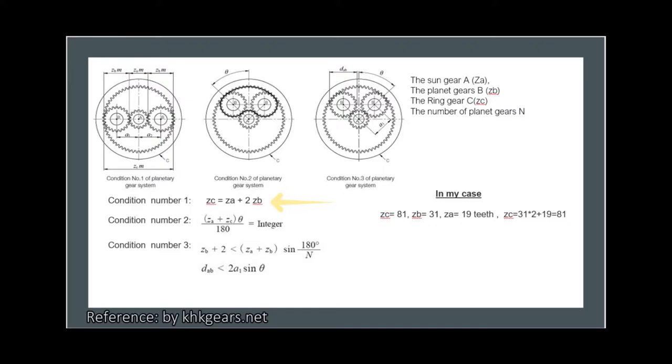Starting with the first condition, which is the one necessary for the center distance of the gears to match. The second condition is necessary for placing the planet gears evenly spaced around the sun gear. However, in this tutorial, the mechanism is a configuration of uneven placement of planet gears.